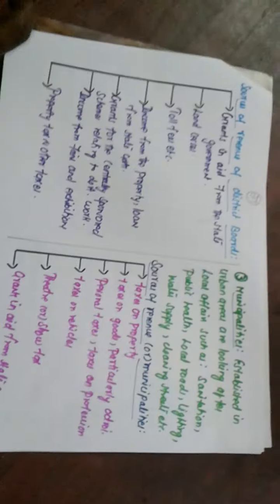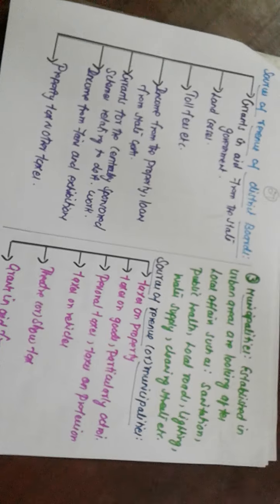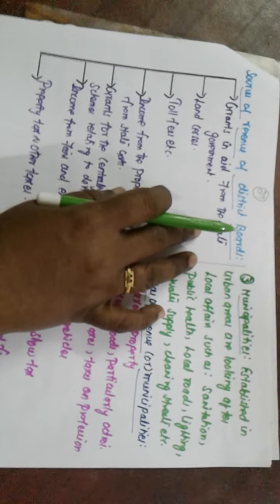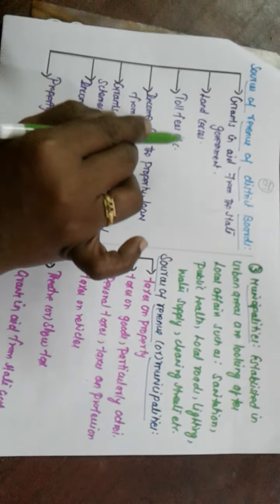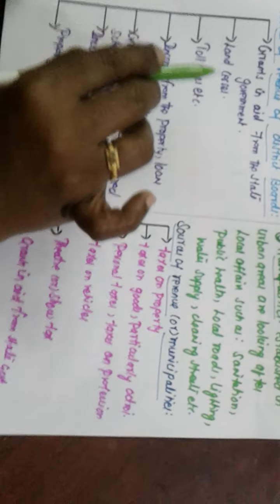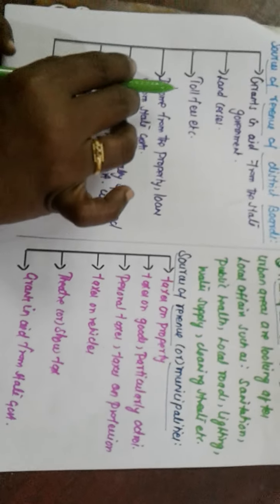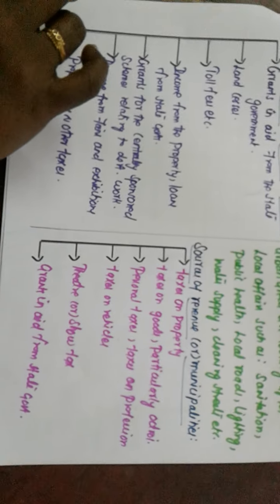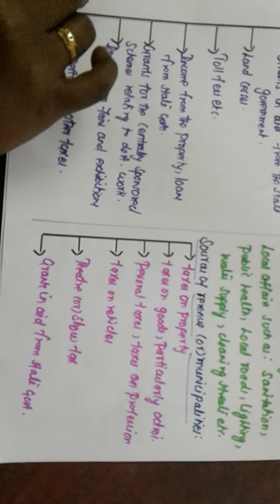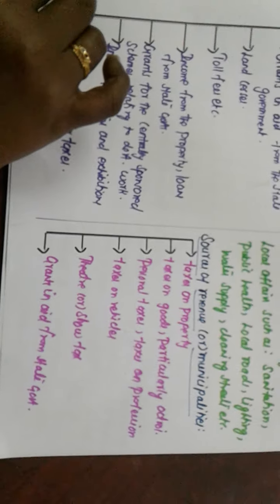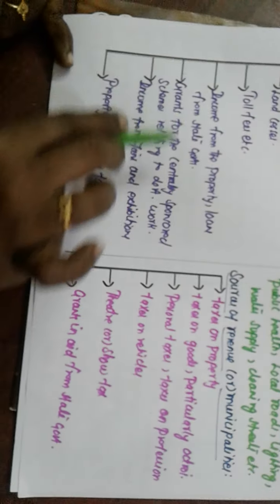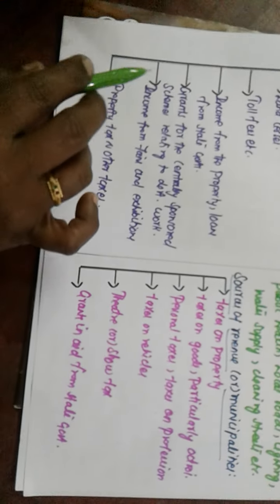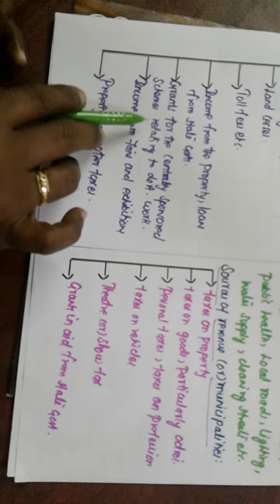The main sources of revenue for district boards or jila parishads are: first, grants received from the state government — the state government provides financial support for rural areas. Second, land services, which is basically land taxes. Third, toll fees — on the movement of goods and services from one place to another, entry tax is charged. Fourth, income from property, and loans from the state government — taxes on individual properties are paid to the government. Fifth, grants from the central government for various development schemes.